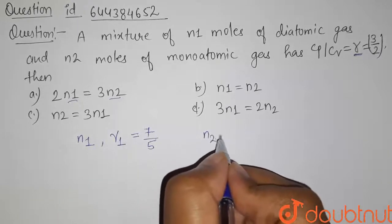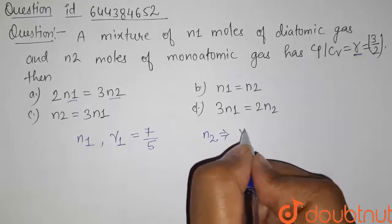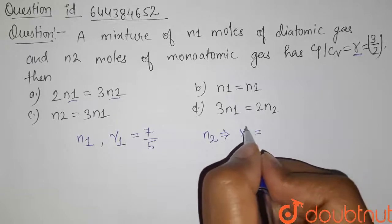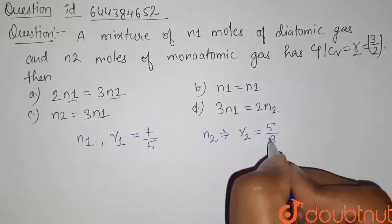And N2 is the number of moles of monoatomic gas, and gamma 2 is the specific heat for monoatomic gas. For monoatomic gas, gamma 2 is given by 5/3.